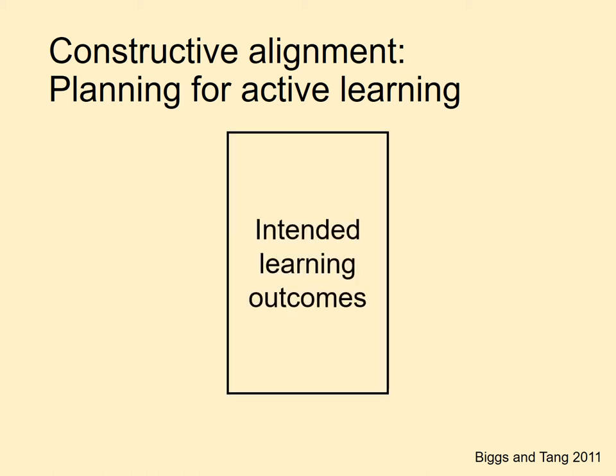ILOs describe what it is that you want students to be able to do after having engaged with the learning. This may be understanding a particular topic, employing a certain methodology, or thinking in a certain way. If you think of learning as a journey, ILOs indicate your destination. Knowing your destination allows you to begin to chart a path.